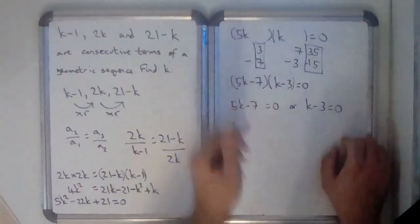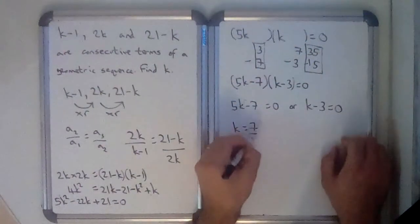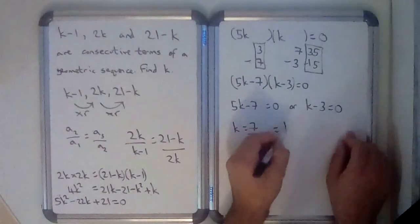...well, 5k would be 7. So k would be 7 over 5. And in the second case, k would be 3.